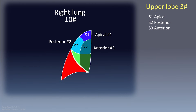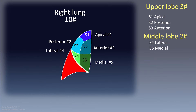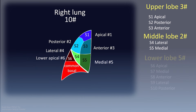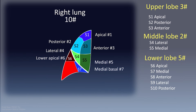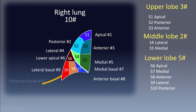The two segments of the middle lobe are named lateral (RS4) and medial (RS5). The lower lobe follows a general arrangement of apical and common basal. The apical is also known as the superior segment, and the common basal comprises four segments: medial basal (RS7), anterior basal (RS8), lateral basal (RS9), and posterior basal (RS10).